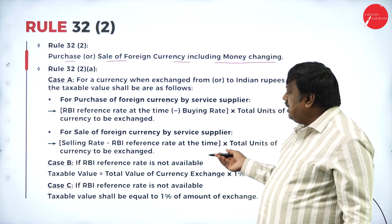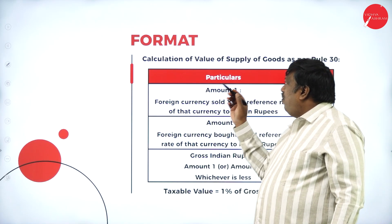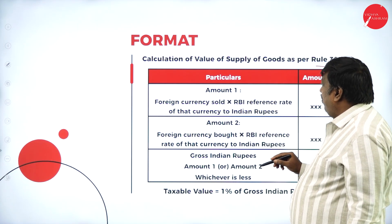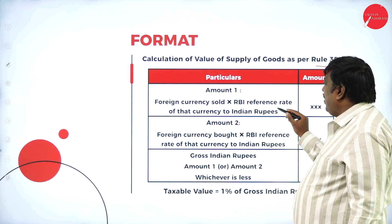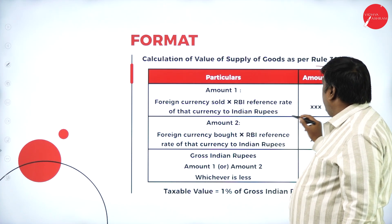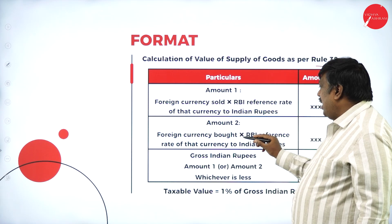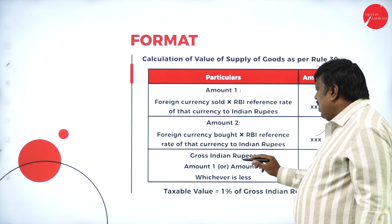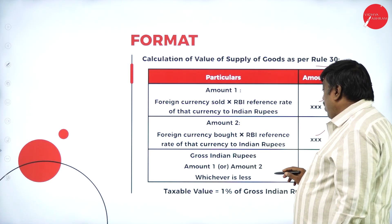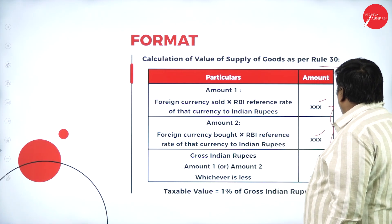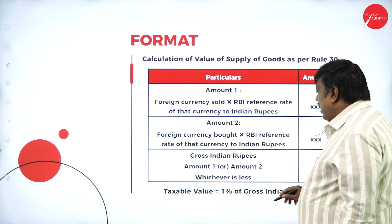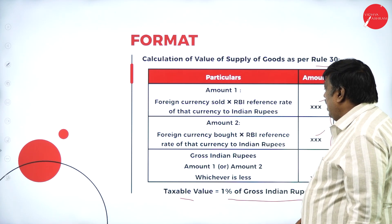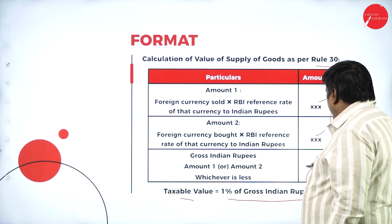In the card format for Rule 32: Amount 1 is foreign currency sold multiplied by RBA reference rate converted to Indian rupees; Amount 2 is foreign currency bought multiplied by RBA reference rate converted to Indian rupees. The gross Indian rupees — whichever of Amount 1 or Amount 2 is less — will be considered as the taxable value, and on that we charge 1 percent.